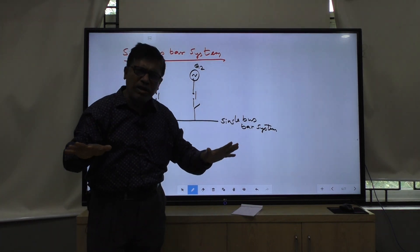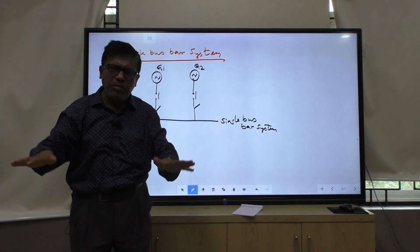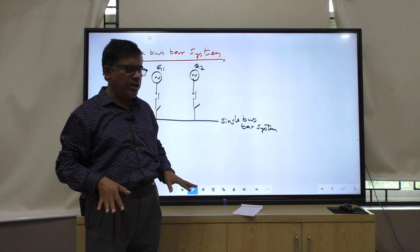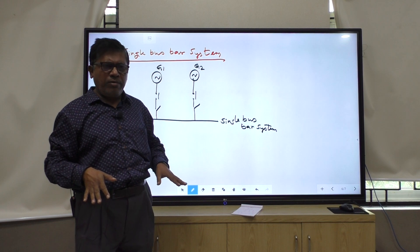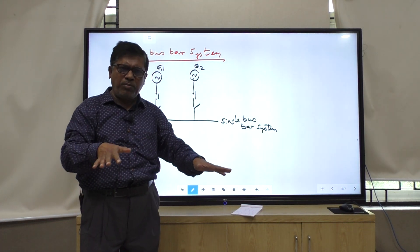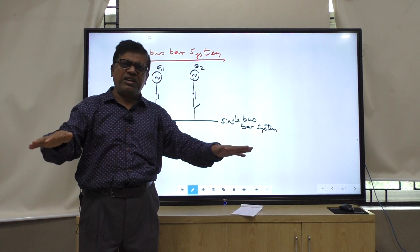In Bulla powerhouse, seven generators are there. In Chiplima powerhouse, three generators are there. In NTPC, two generators are there. In Nalko, if you go to Nalko National Aluminium Company, six generators are there.